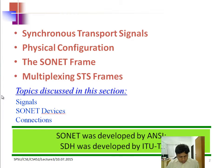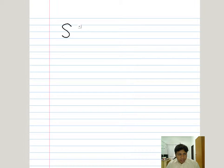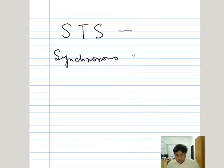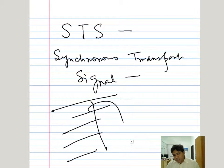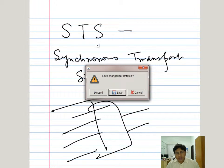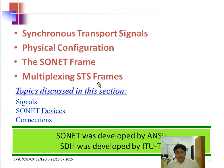SONET basically defines a hierarchy of electrical signals and optical signals. We will be discussing about STS — the full form of STS is Synchronous Transport Signal. We are talking about how these signals are made, what the hierarchy is, how different signals multiplex together to create higher signals. We will discuss multiplexing, STS frame, physical configuration, and SONET frame.